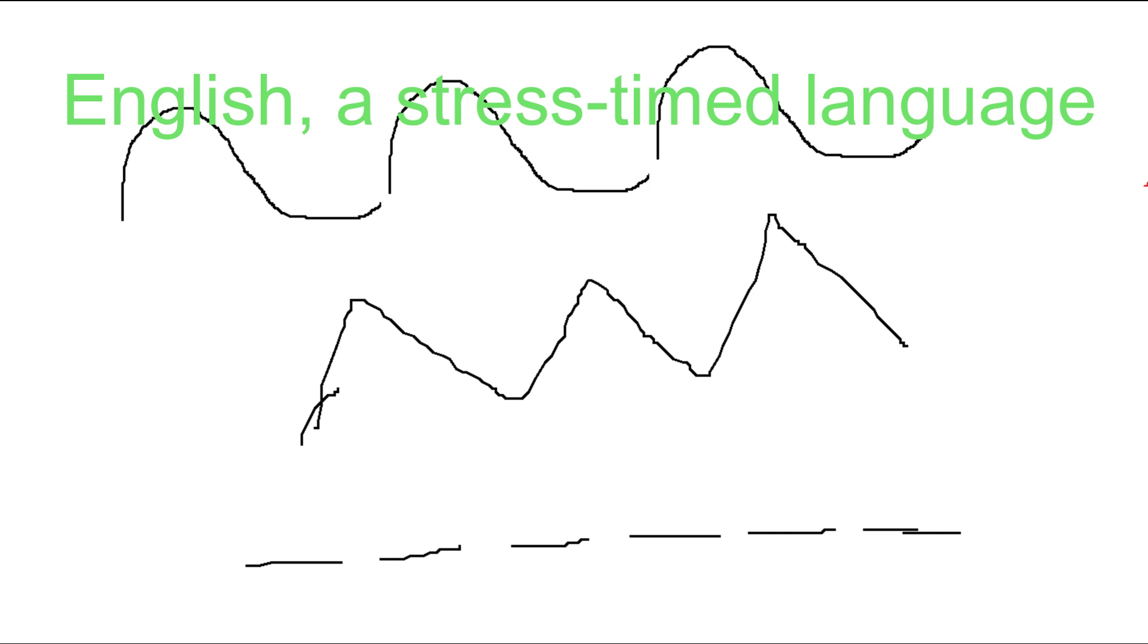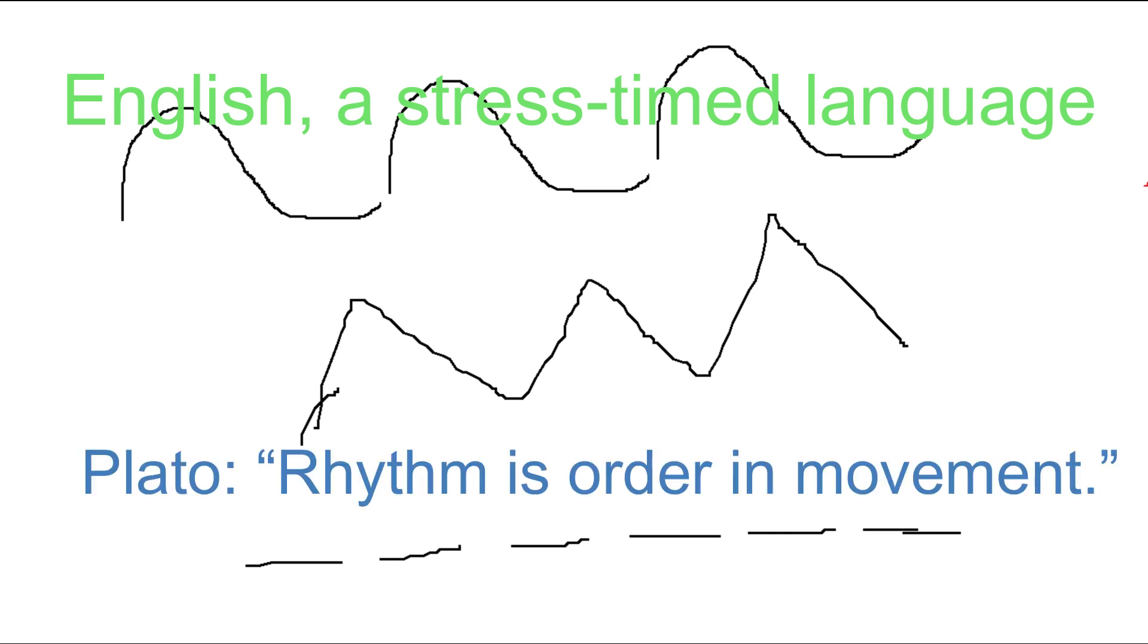All moving things, whether they are heartbeats, waves in the ocean, or the flow of speech, have rhythm. What is rhythm? Plato said, rhythm is order in movement. The question then is, what element establishes order in the flow of speech?